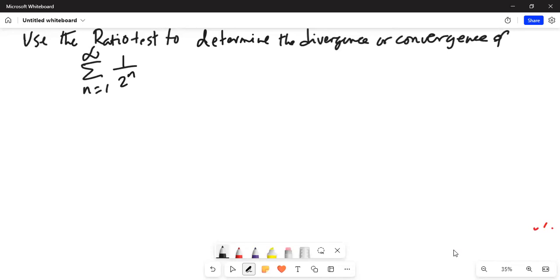Use the ratio test to determine the divergence or convergence of the given series which is summation n tends from 1 to infinity, 1 over 2 to the power of n. So this is the particular problem that we are dealing with.